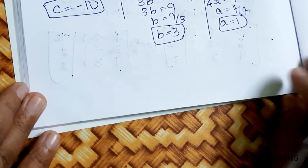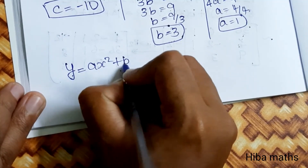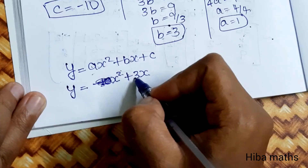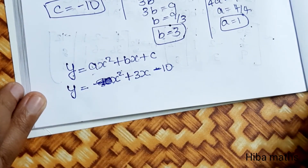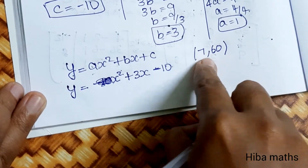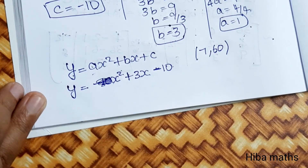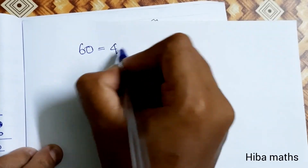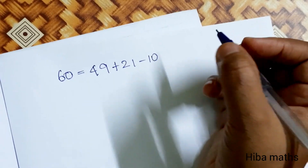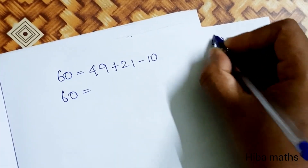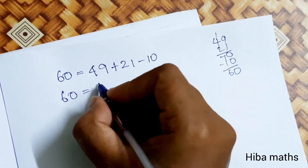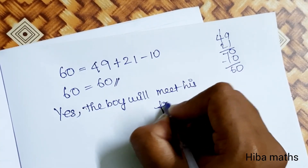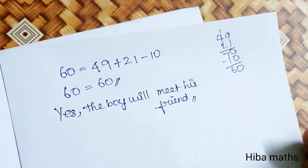The equation is y = x² + 3x - 10. To check if he meets his friend at (7, 60), substitute x = 7: y = 7² + 3(7) - 10 = 49 + 21 - 10 = 60. Since 60 = 60, yes, the boy will meet his friend. We will go to the next question — if you have any doubts, comment below. Thank you for watching.